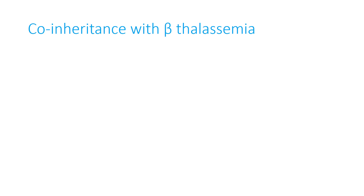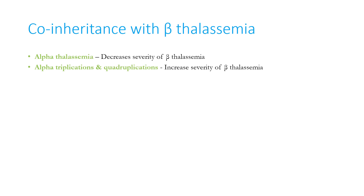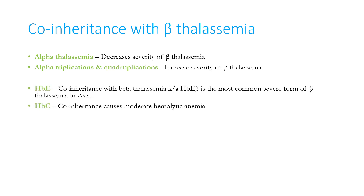When two different types of abnormal hemoglobin are co-inherited: when alpha thalassemia is co-inherited with beta thalassemia, there is decreased severity of the clinical presentation of beta thalassemia, whereas alpha triplication or quadruplication increases severity because symptoms in beta thalassemia are majorly due to accumulation of alpha chains. Co-inheritance of hemoglobin E with beta thalassemia, called hemoglobin E beta, is the most common severe form of beta thalassemia in Asia. Hemoglobin C co-inheritance causes moderate hemolytic anemia.